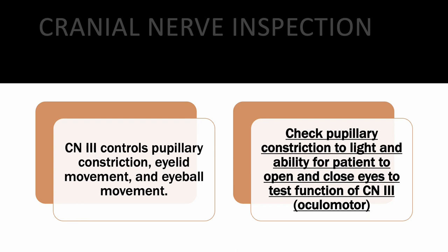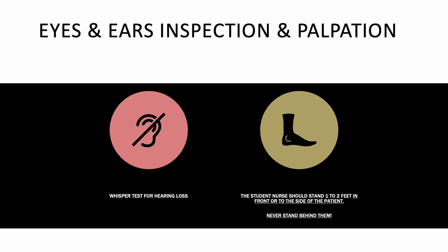Cranial nerve 3 is the oculomotor nerve — 'oculo' means eye and 'motor' means movement. To check it, we test pupillary constriction with light first, then have the patient open and close their eyes to test eyelid movement. Cranial nerve 3 covers pupillary constriction, eyelid movement, and eyeball movement. So for CN 3, we do the cardinal fields of gaze plus the pupillary light test and eye open-and-close. That's it for CN 3.